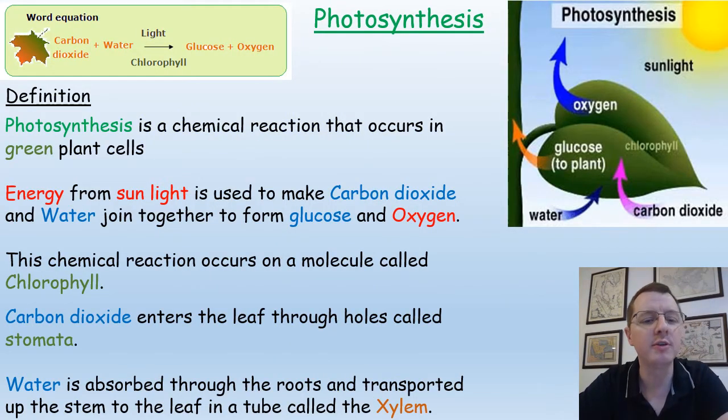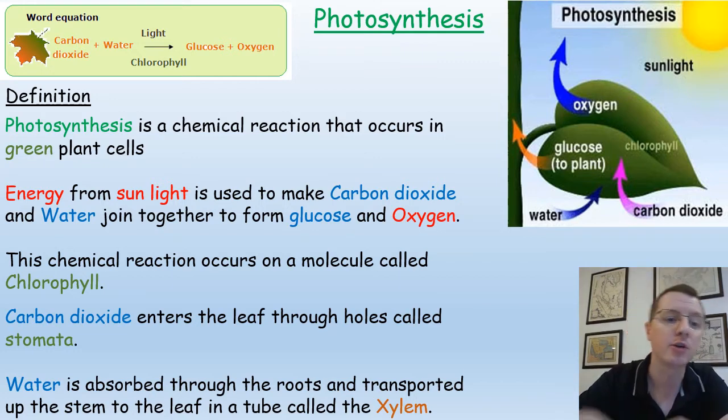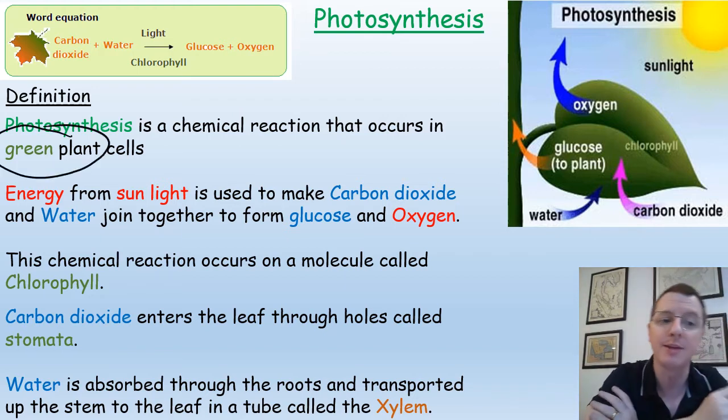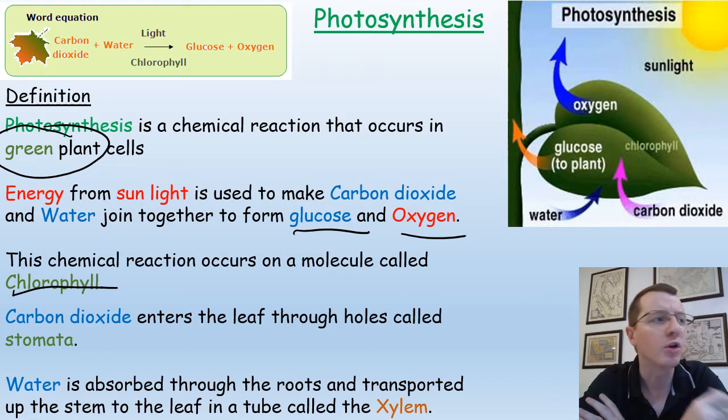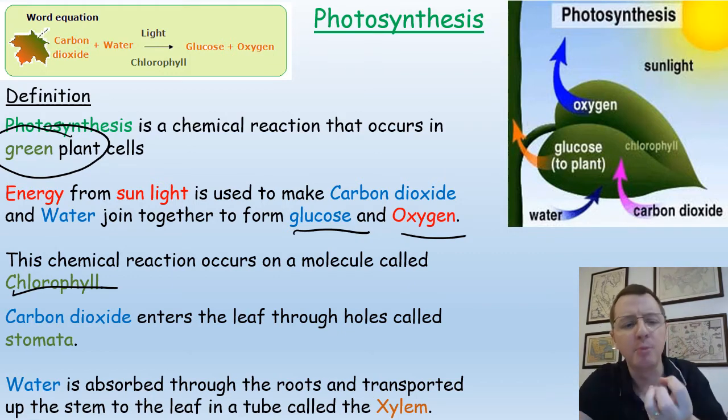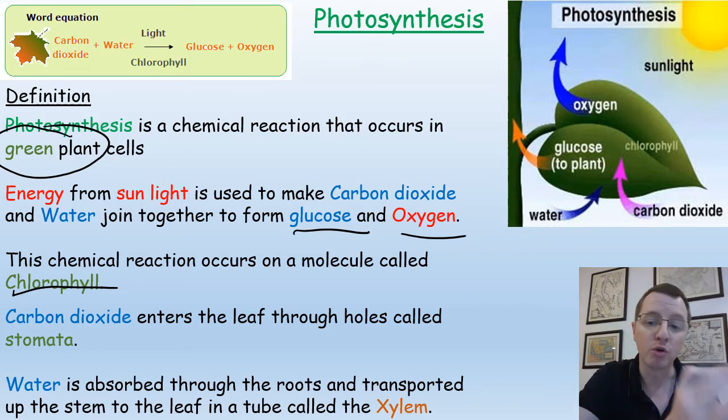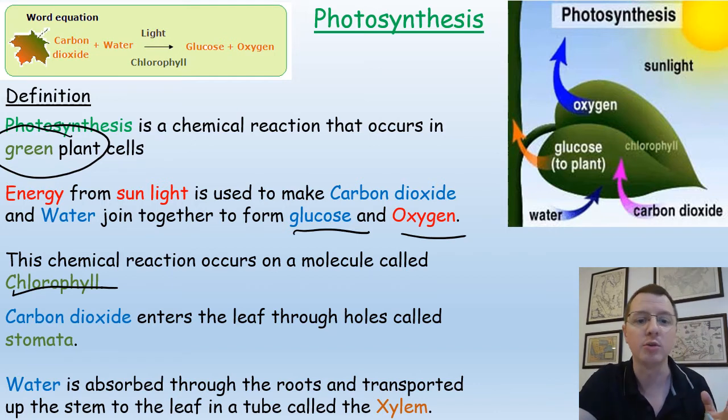So what is the definition of photosynthesis? Well, photosynthesis is a chemical reaction that occurs in green plant cells. Energy from sunlight is used to make carbon dioxide and water join together and form glucose and oxygen. This chemical reaction occurs on a molecule called chlorophyll. The chlorophyll is actually the molecule that absorbs the sunlight and is able then to utilize that sunlight to join the water and the carbon dioxide together and reform those molecules as glucose.